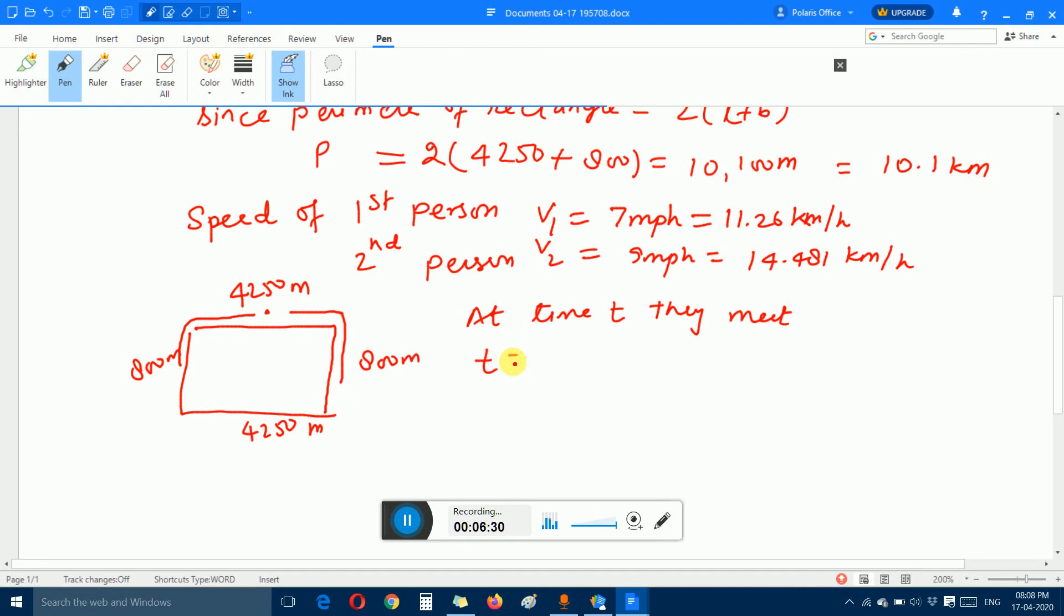We know that time equals distance divided by speed. This implies S divided by V1 equals 10.1 minus S divided by V2.